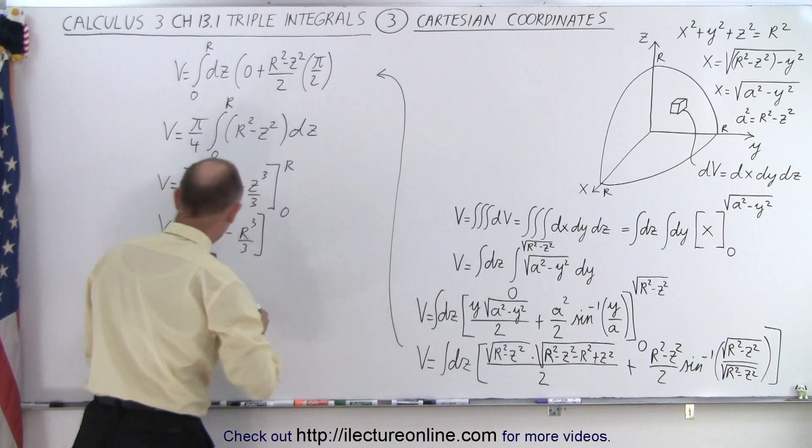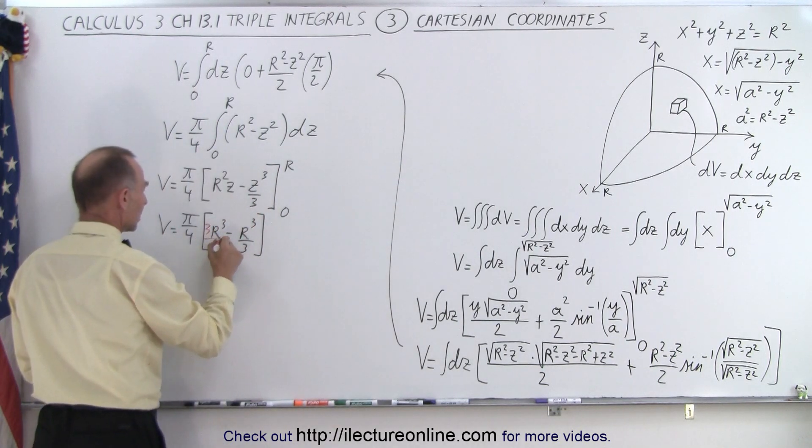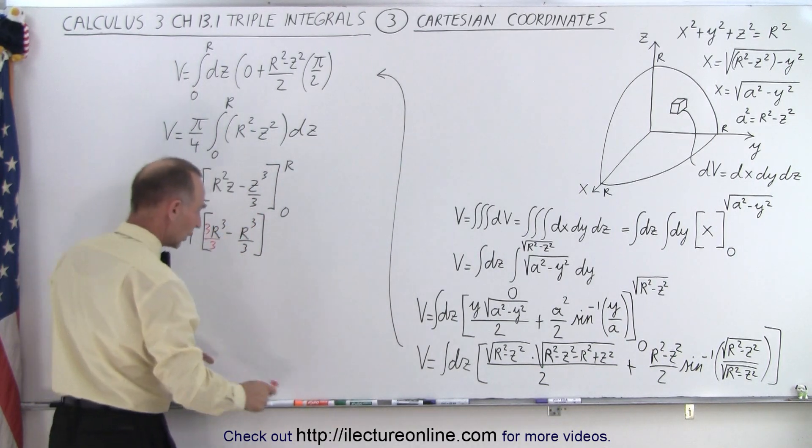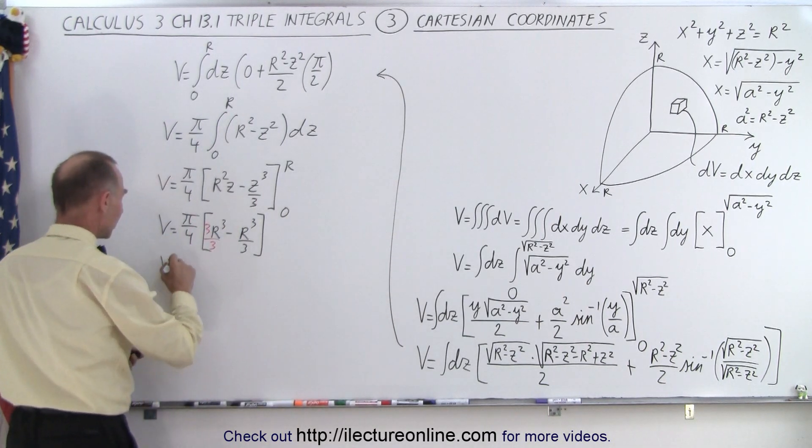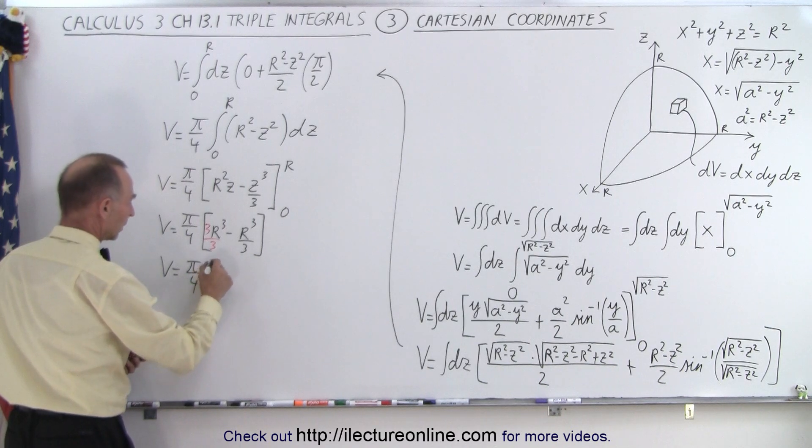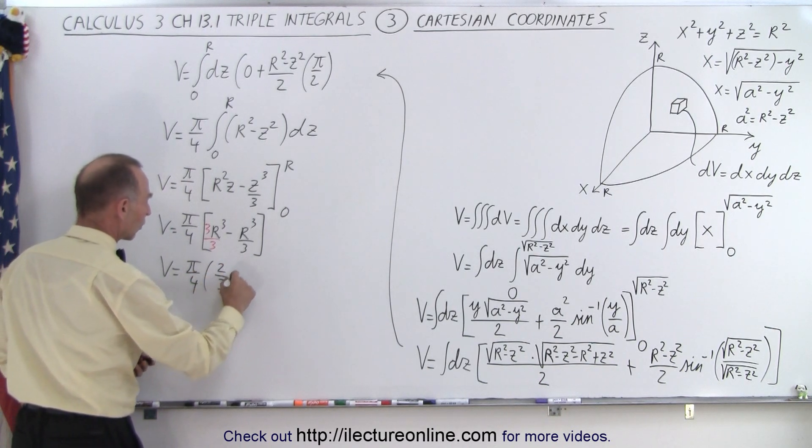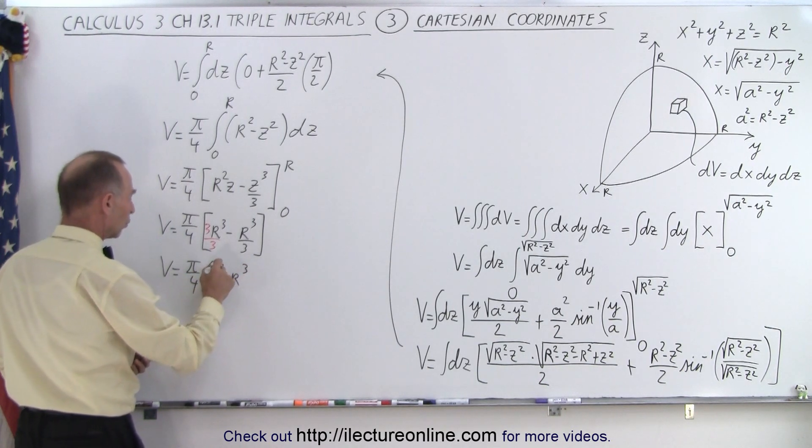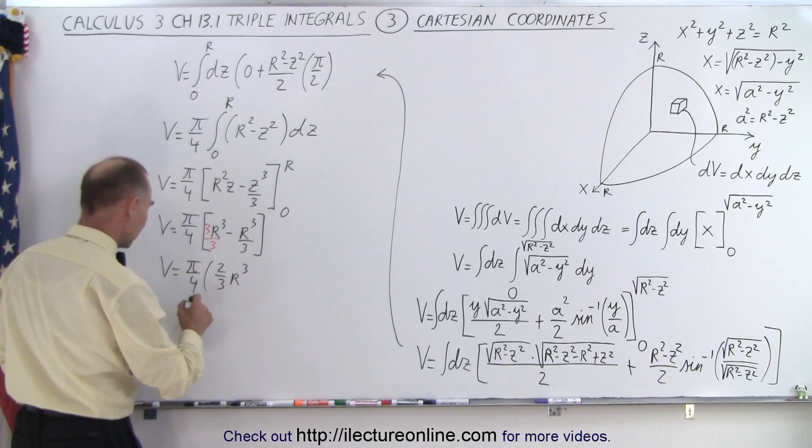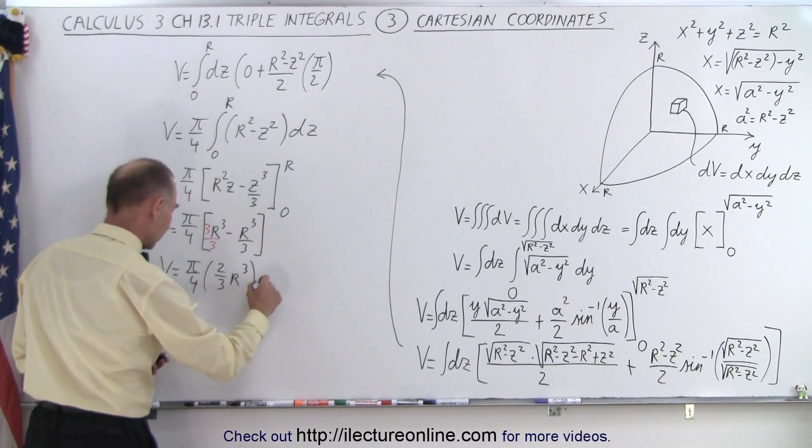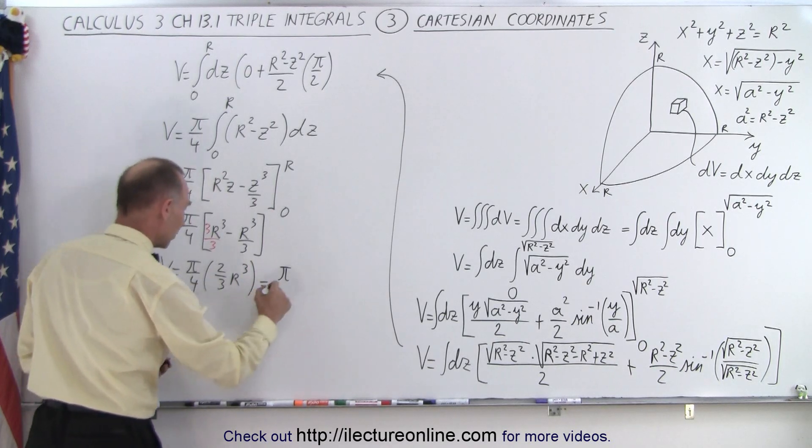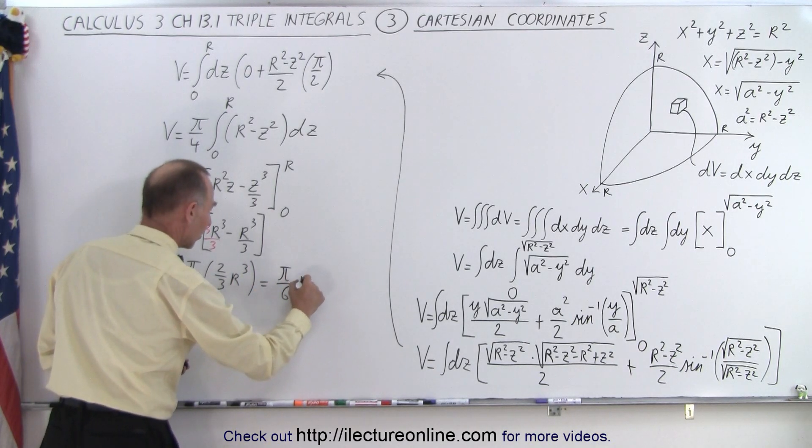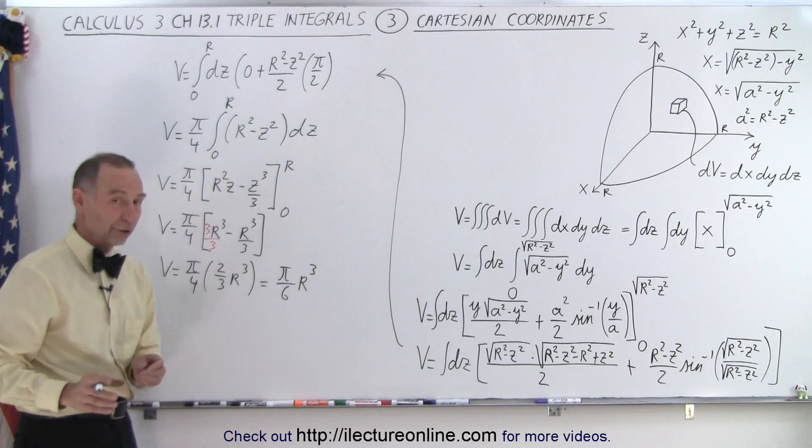And then if we multiply this by 3 and divide by 3, like so, we can then say that 3 - 1 is 2 or 2/3, so v equals π/4 times 2/3 r³, and the 2 and the 4 cancel out, so you end up with π/6 times r³.